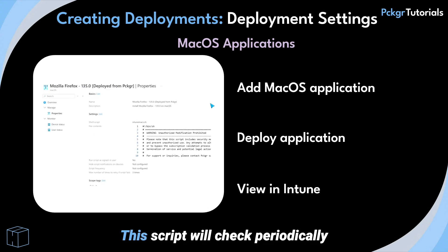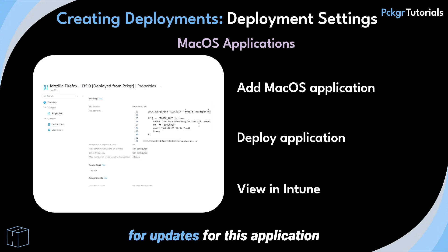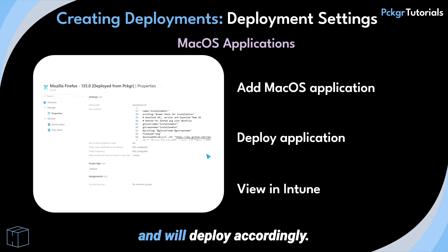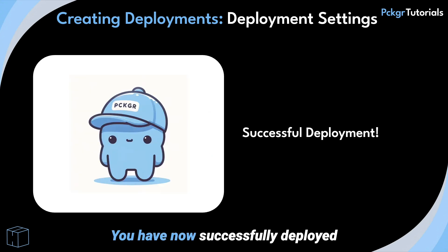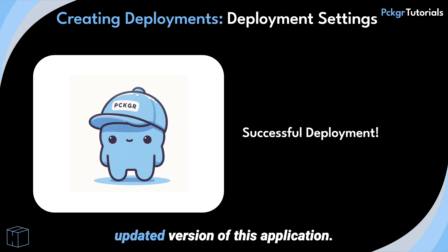Click View in Intune and view this shell script for your deployed application. This script will check periodically for updates for this application and will deploy accordingly. You have now successfully deployed your application, and Packager will continue to detect, test, and deploy the updated version of this application.